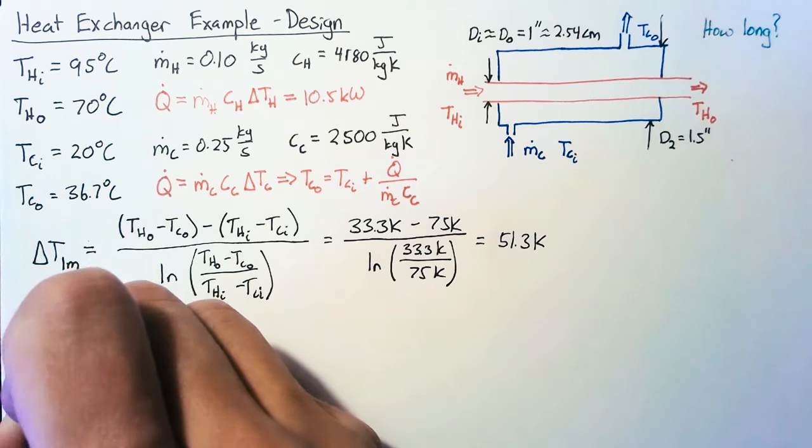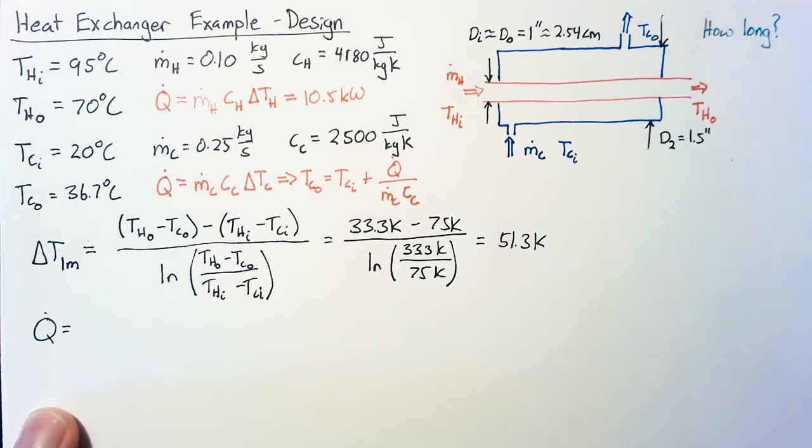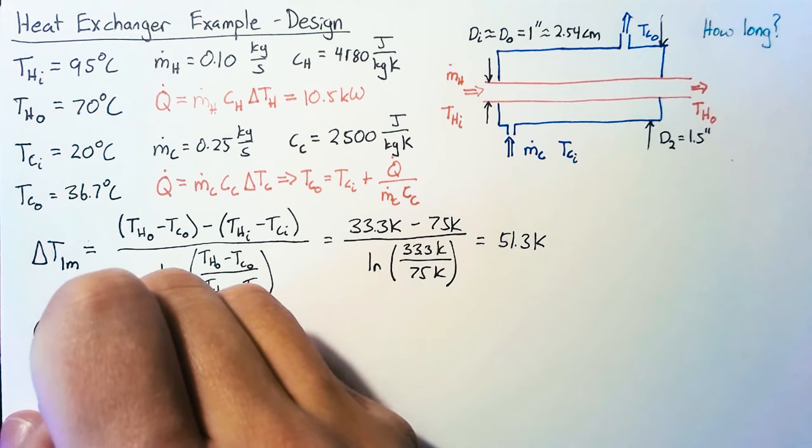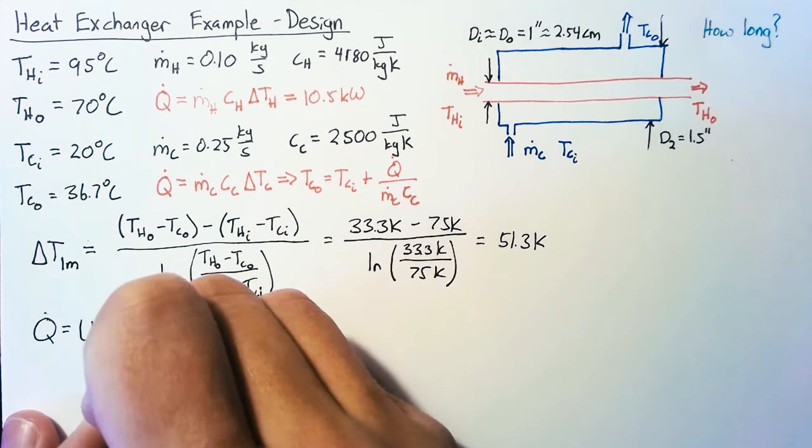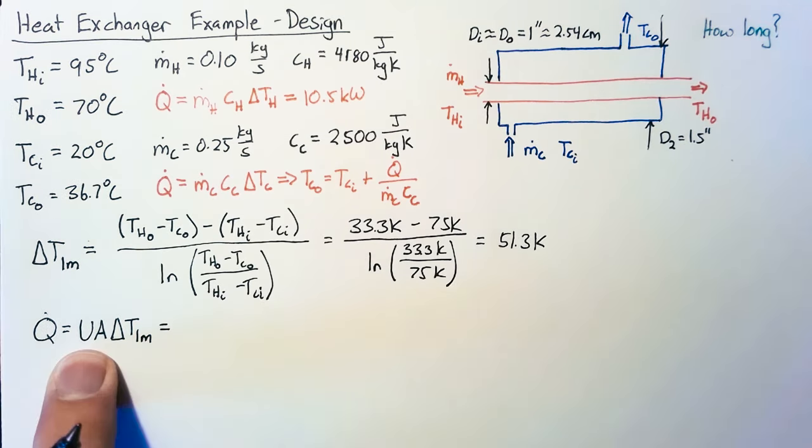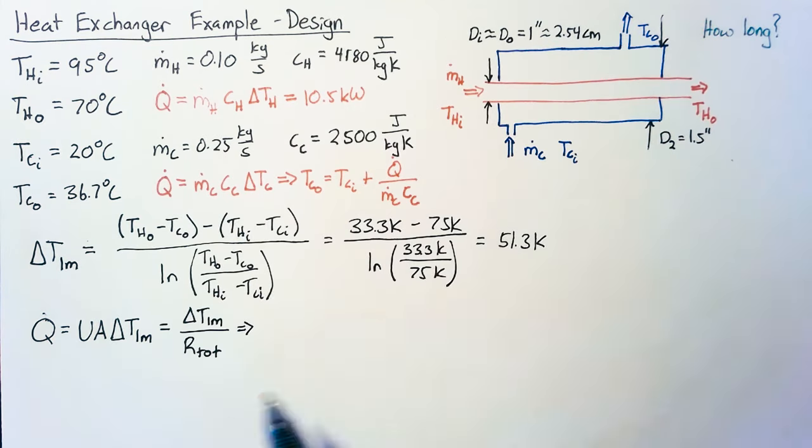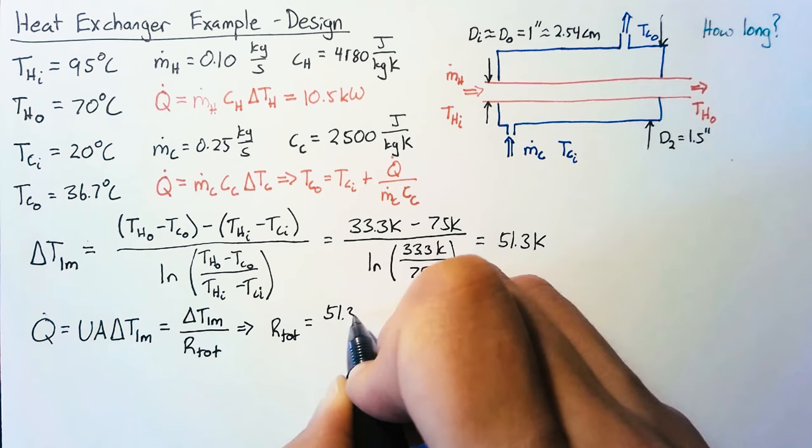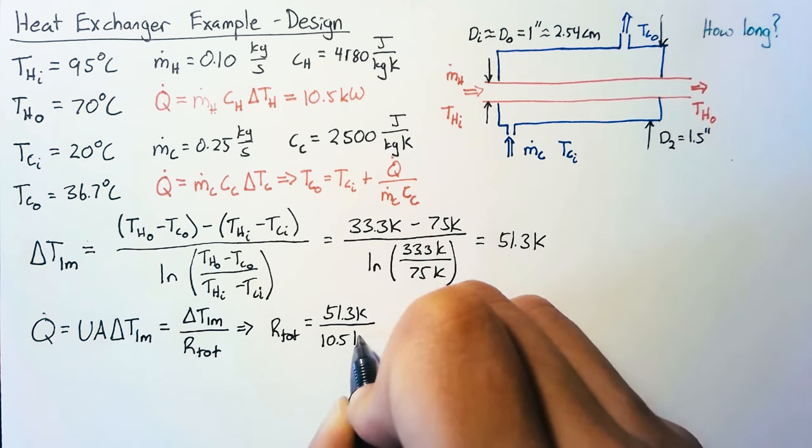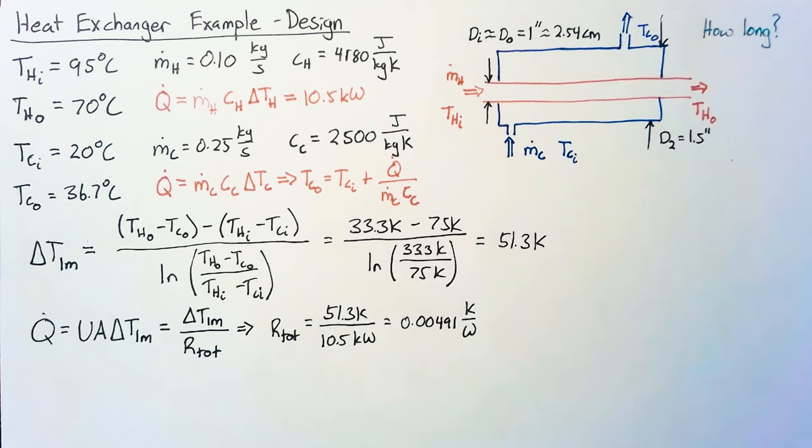With that, we can use another equation for Q_dot. This looks at the actual heat transfer based on thermal resistance between the two fluids. Q = U*A*ΔT_lm. Personally, I prefer to think in terms of thermal resistance, so this UA term is the same as one over the total thermal resistance. From that, we can solve for R_tot. It will be 51.3 Kelvin divided by that Q_dot of 10.5 kilowatts, which ends up as 0.00491 Kelvin per watt. This is a key piece in determining how long our heat exchanger needs to be.